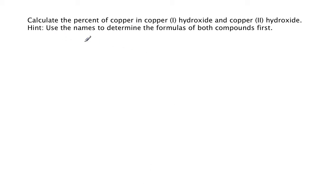So let's first write the formulas because we need the formulas. We need to know how many ions are in there so we can figure out the molar mass of these compounds. So copper one, remember that Roman numeral one tells me the charge on copper. It doesn't tell me how many are in the formula.